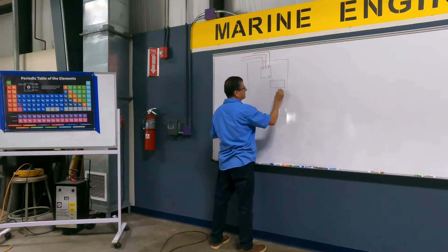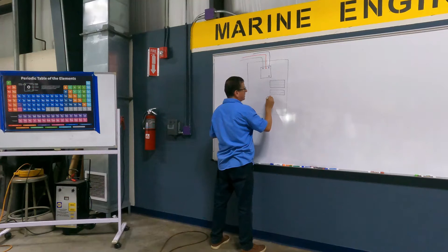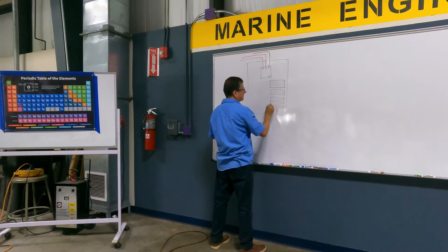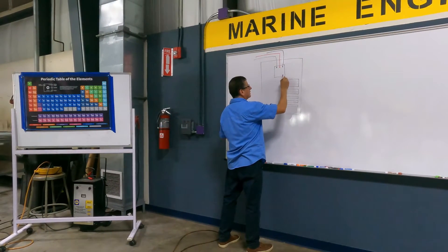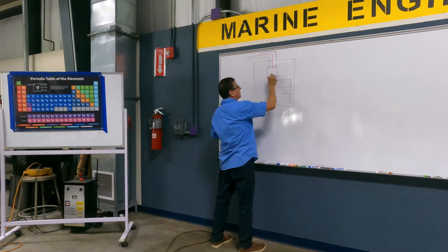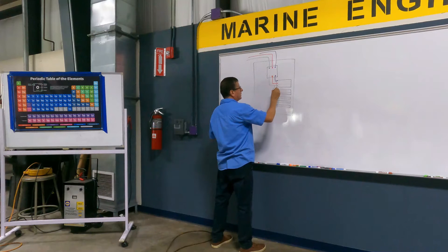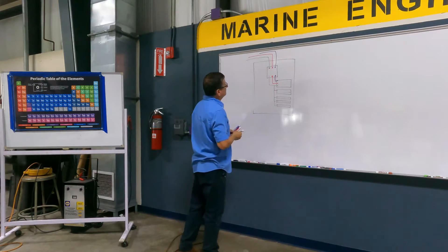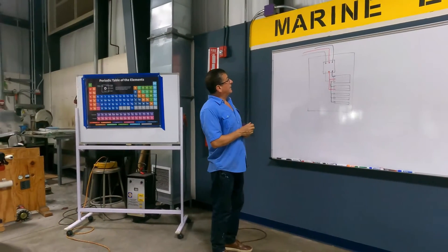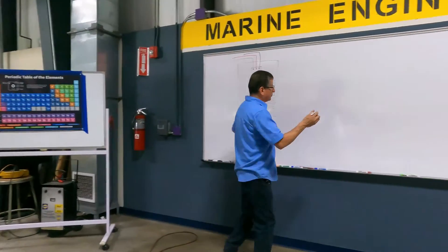I have breakers: a three-phase breaker, double-face breakers for some equipment, and single-face breakers. You are familiar with this distribution. I have one phase here, another phase here, another phase here — and this is the bow thruster panel.